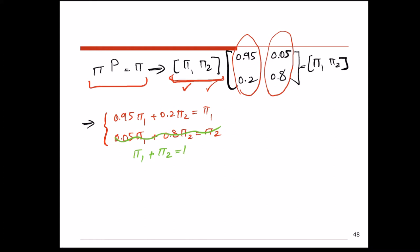Now we have two independent equations. We solve this set of equations to find pi 1 and pi 2. The new value for pi 1 is 0.8, and the new value for pi 2 is 0.2.